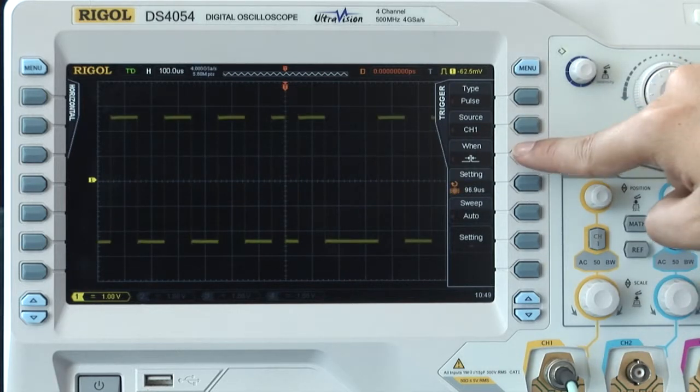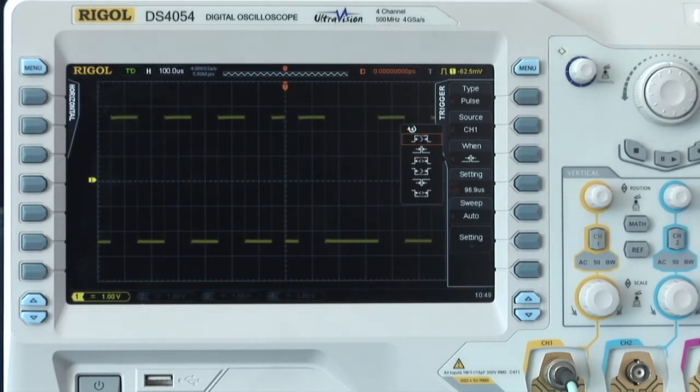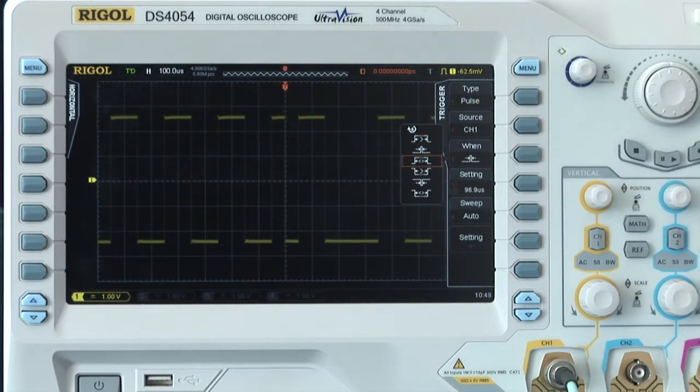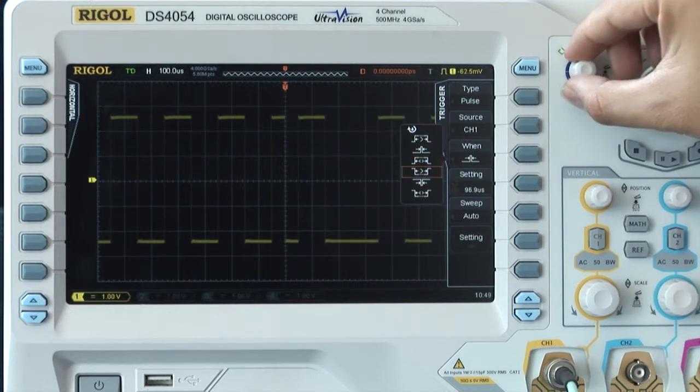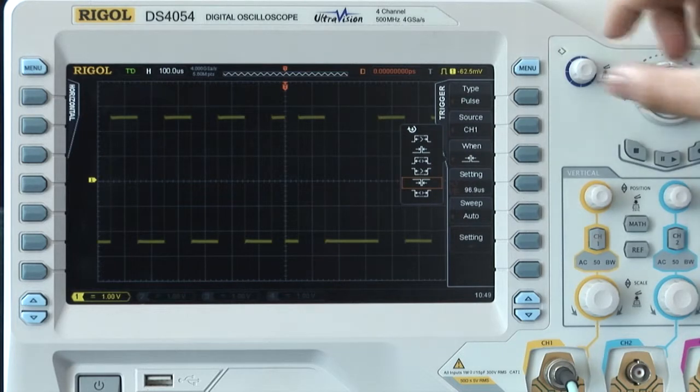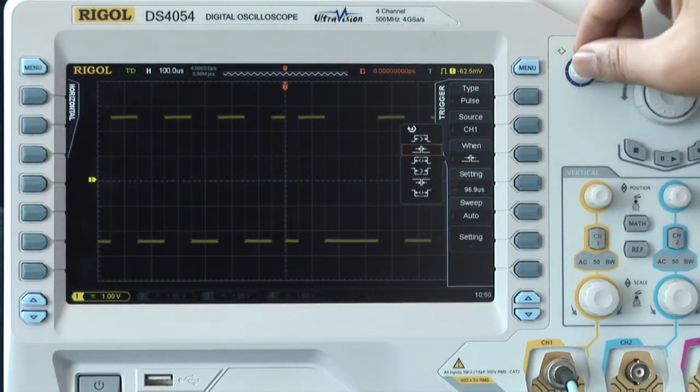You can see that there are also many other parameters that can help lock in the signal of interest, such as positive pulse width larger than a value, positive pulse width smaller than, positive pulse value smaller than a value and larger than another value, negative pulse width larger than a value, negative pulse width smaller than a value, and negative pulse width smaller than or larger than another value.